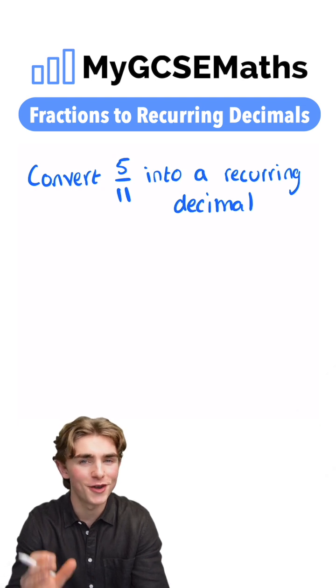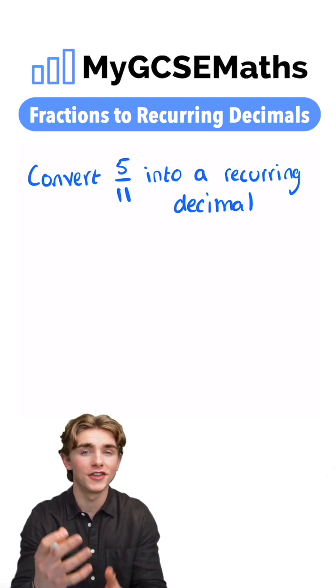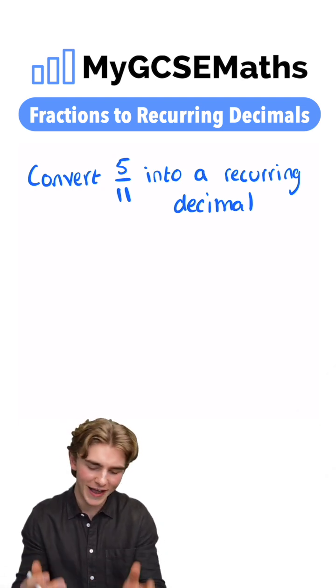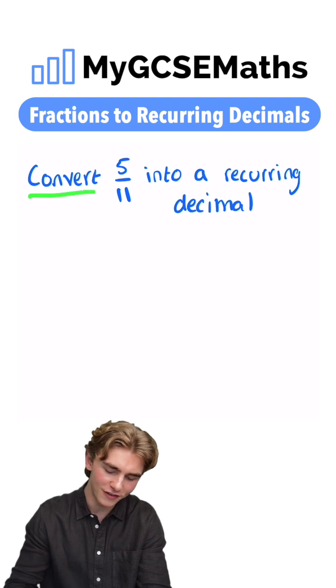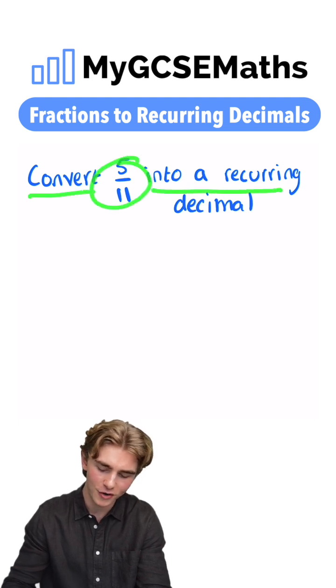This is something which trips a lot of students up, but luckily when you know how to do it, it's not too bad. So let's have a look. It says convert 5 over 11 into a recurring decimal.